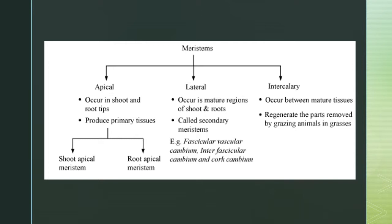There are three types of meristems in plants. The first is the apical meristem — 'apical' means at the tip — which occurs at the tip of a shoot and a root. A shoot is the portion of the plant above ground. The shoot apical meristem and root apical meristem produce primary tissues like the epidermis, primary xylem, and primary phloem.